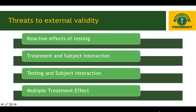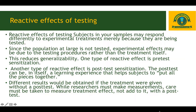The four major threats to external validity are: first, reactive effects of testing; second, treatment and subject interaction; third, testing and subject interaction; and fourth, multiple treatment effect. Let's now discuss these threats that could affect external validity, starting with reactive effects of testing or reactive arrangements. Reactive arrangement refers to a number of factors associated with the way in which a study is conducted and the feelings and attitudes of subjects involved.